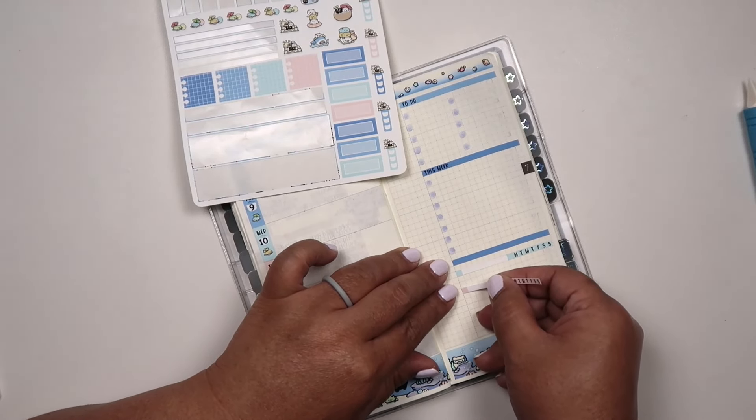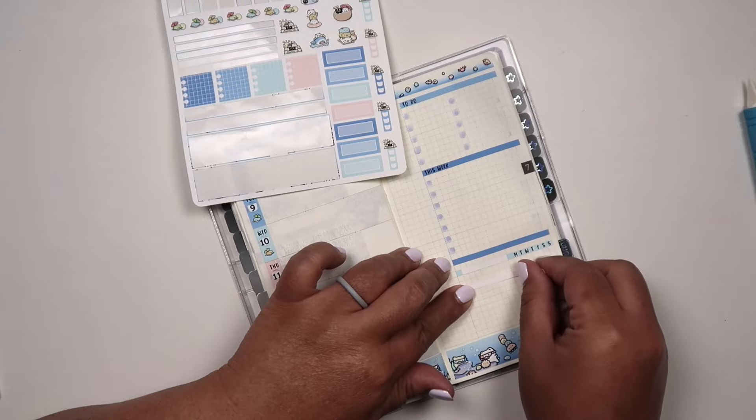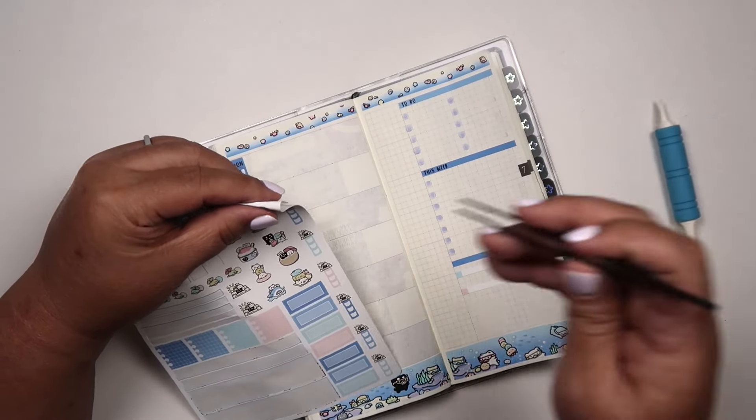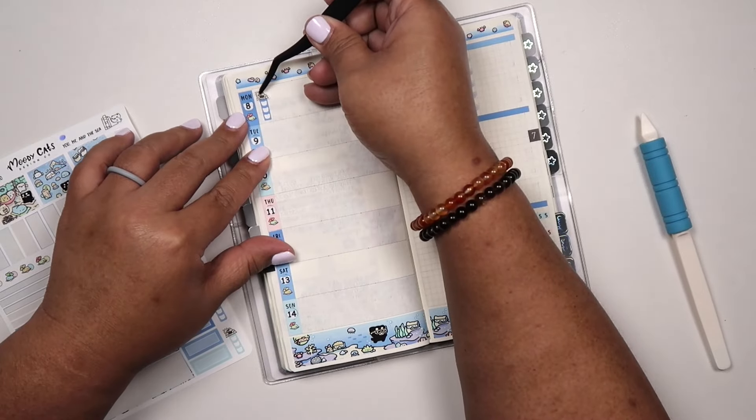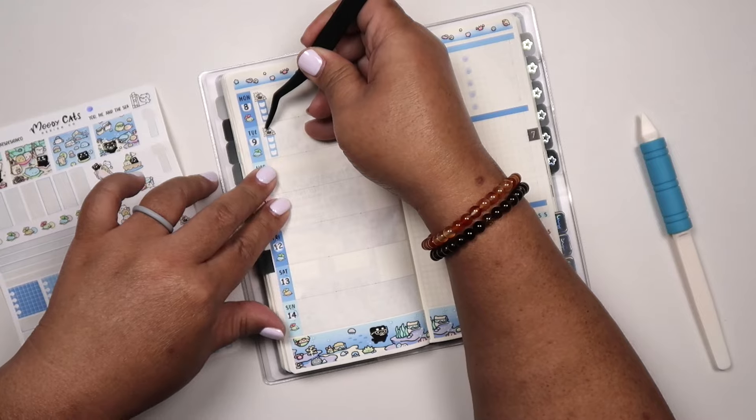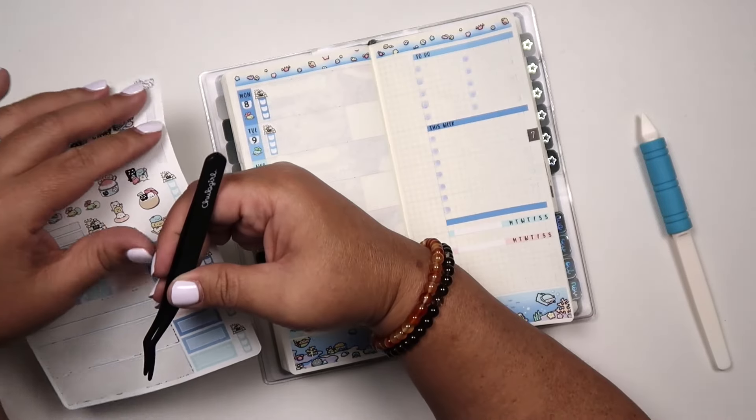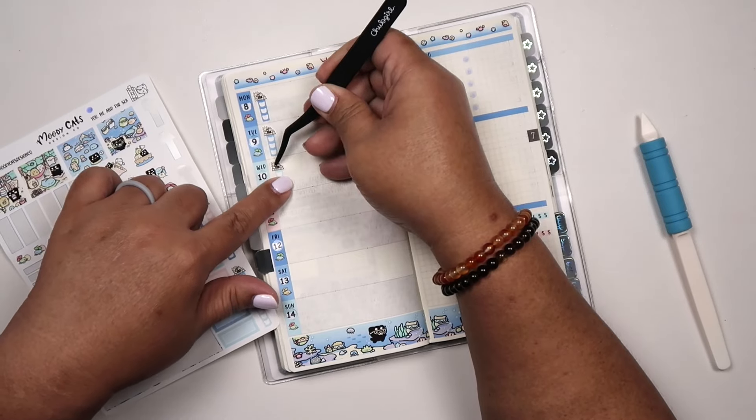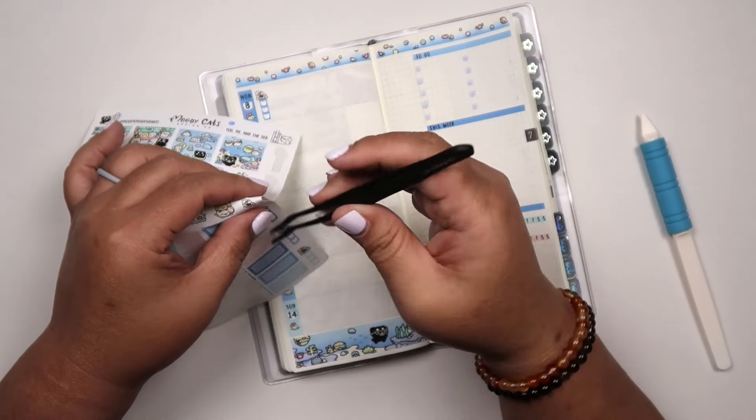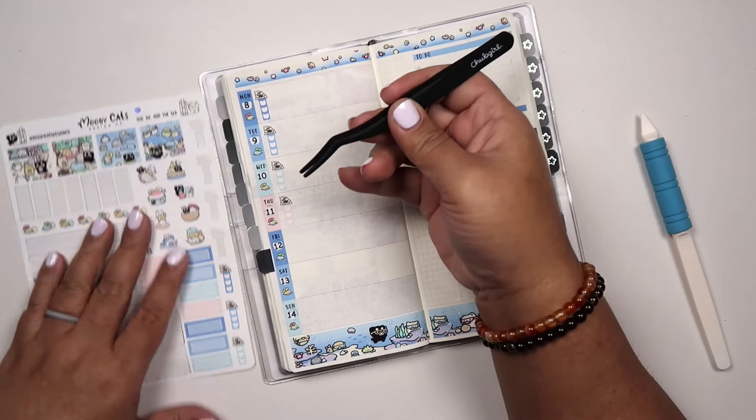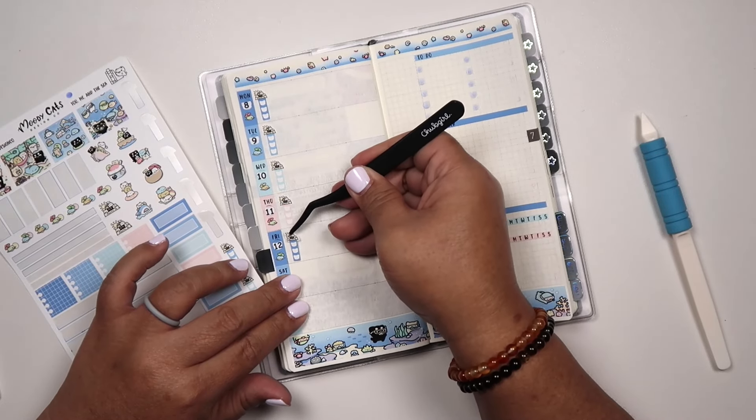The second one I would probably say is Coco and Fluff because they have that top and bottom washi. And she also includes a lot of boxes and deco for your spreads, which I will actually be using next week because I already recorded that. So stay tuned for that. That will be next week is Coco and Fluff. And yeah, I really love her kit.